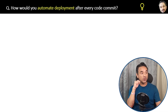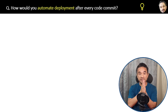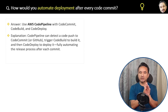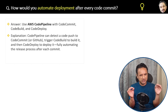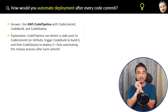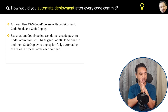How would you automate the deployment after every code commit? The answer is CodePipeline combined with CodeCommit. CodePipeline is the most important tool of all. It can detect a code push to CodeCommit, trigger CodeBuild to build it, and then trigger CodeDeploy to deploy it.